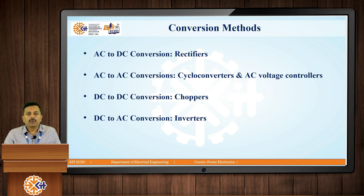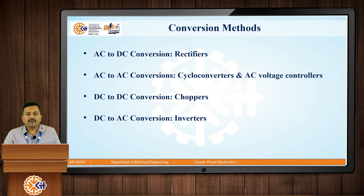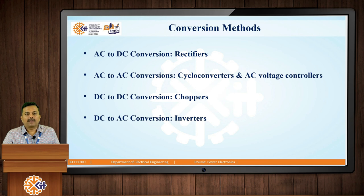The different conversion methods used in power electronics are: first, AC to DC conversion, which is called rectifiers. In rectifiers there are two types — uncontrolled rectifiers and controlled rectifiers. The second method is AC to AC conversion; with the help of cycloconverters and AC voltage controllers we can achieve this. Cycloconverters deal with increasing or decreasing frequency levels while keeping the voltage constant. AC voltage controllers are devices used to increase or decrease the voltage level as per requirement while keeping the frequency constant.